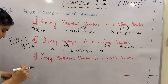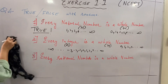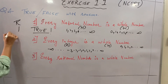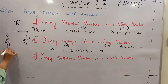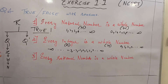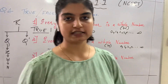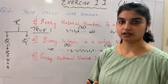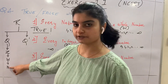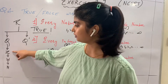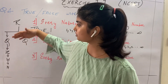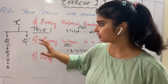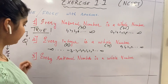To avoid mistakes on such questions, remember the flow chart: Real numbers are the parent category, divided into rational and irrational numbers. Under rational numbers come integers (Z), under integers come whole numbers (W), and under whole numbers come natural numbers (N). So natural numbers are included in whole numbers, whole numbers in integers, integers in rational numbers, and rational numbers in real numbers.